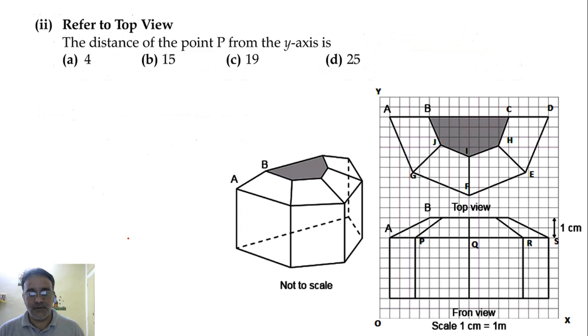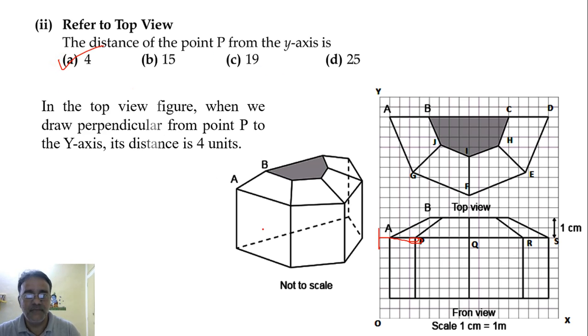Now we will move toward the second question. Refer to top view, the distance of the point P from the y-axis. So this question I have taken from CBSE sample paper. In fact, this question is related with the front view. So refer to front view. This is the y-axis. So from the y-axis, the distance is almost near to 4. Not exactly 4, but in the question we don't have any other option. So 15 is not possible, 19 is not possible, 25 is not possible. So the correct answer is 4. In the front view figure, when we draw perpendicular from point P to the y-axis, its distance is approximately equals to 4 units.